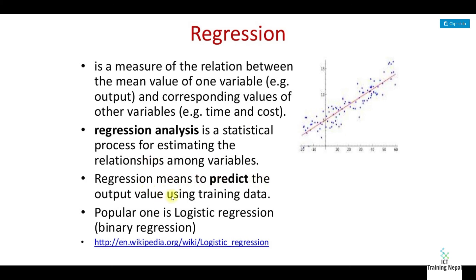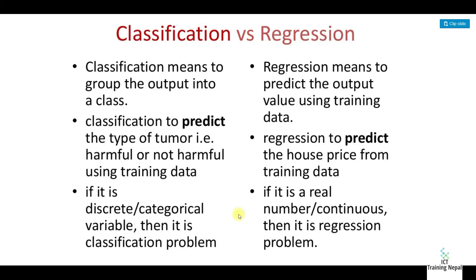Regression analysis is the statistical process of estimating the relationship among variables. It is used to predict the output data using the training data. A popular one is logistic regression. Classification means to group the output into a class — to predict the output value using training data. For example, classification predicts the type of tumor — harmful or not — while regression predicts house prices from training data.